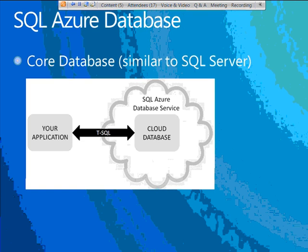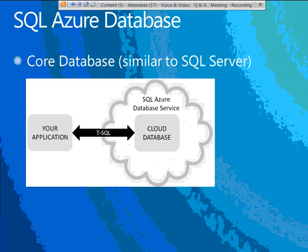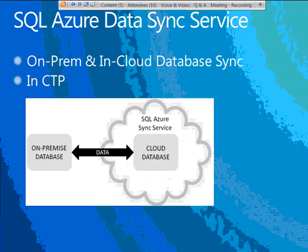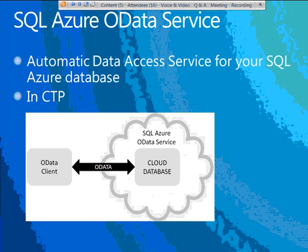In the SQL Azure area, we have SQL Azure Database — core database functionality very similar to SQL Server, with a few caveats. We have SQL Azure Reporting, analogous to SQL Server Reporting Services, also in Technology Preview. The SQL Azure Data Sync service lets you synchronize on-premise SQL Server databases with SQL Azure databases, even across different data centers — also in CTP. The SQL Azure OData service automatically creates a data access service for your database using the OData protocol, which is easy for different types of apps, clients, and devices to consume — also in CTP.